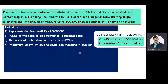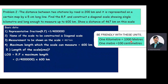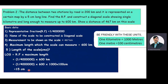Before constructing the diagonal scale, we need to calculate the length of the scale in centimeters. The length of the scale equals the representative fraction multiplied by the maximum length the scale can measure. RF is 1 by 40 lakhs and maximum length is 600 kilometers. Converting 600 kilometers to centimeters and simplifying gives the length of the scale as 15 centimeters.